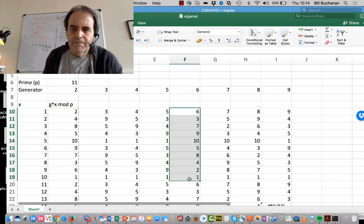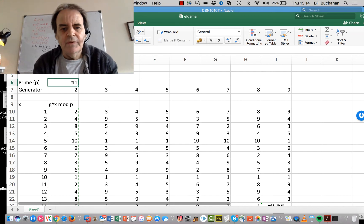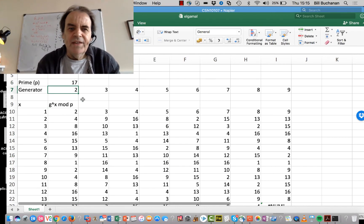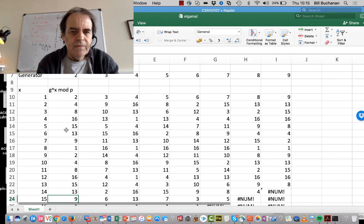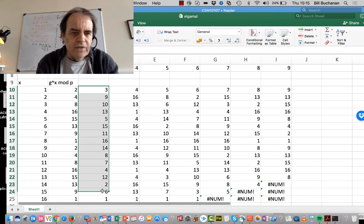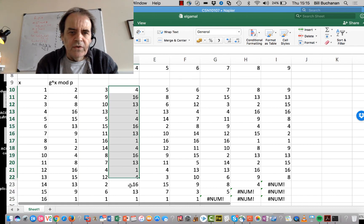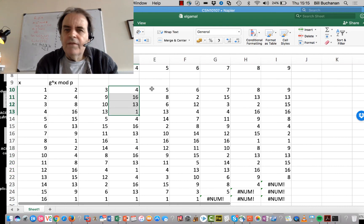We can select other prime numbers, although the values become quite large in Excel. If we take P equals 17, you can see G equals 17 works because you get all values 1, 2, 3, 4, and so on. 3 also works, 4 doesn't work because we're repeating, and 5 works.